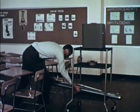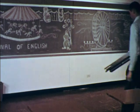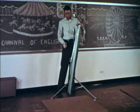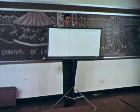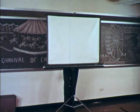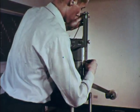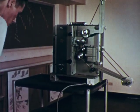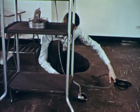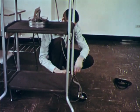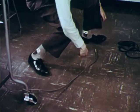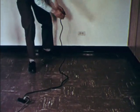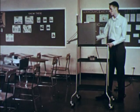This time the projectionist is able to set up the equipment before the class has assembled. Often the setup must be made while the class is in session. The screen is placed directly in front of the projector and raised to the proper height. The projector is then assembled. The power cord is twisted around the leg of the stand to prevent the projector from being tipped over if the cord is accidentally pulled. If an extension cord is used, it should be secured by a knot. If the sound fails to operate, it may be because the plug is reversed in the outlet.